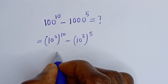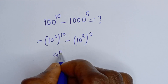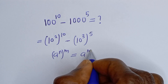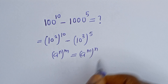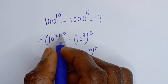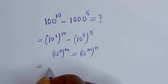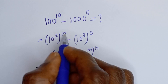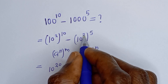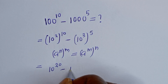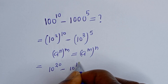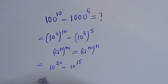Take note of this rule: if you have a raised to power n, to the power of m, this is equal to a raised to power m times n. So 10 to the power of 2, to the power of 10, can be written as 10 raised to power 2 times 10, that is 20. And 10 to the power of 3, to the power of 5, can be written as 10 raised to power 3 times 5, that is 15.